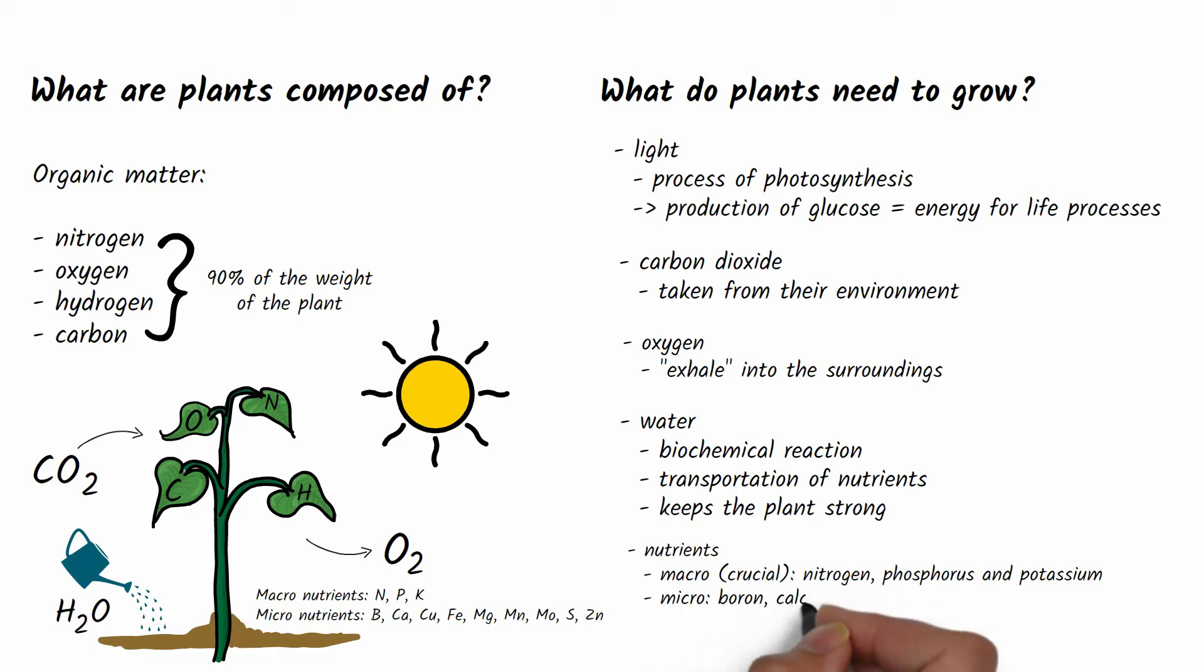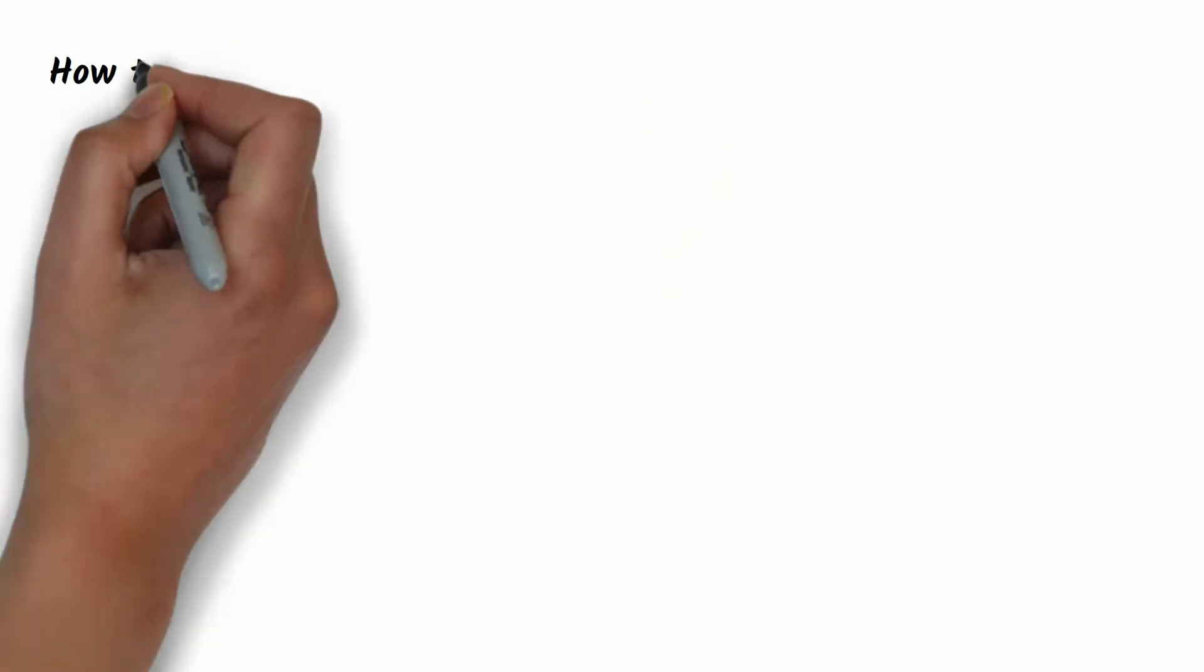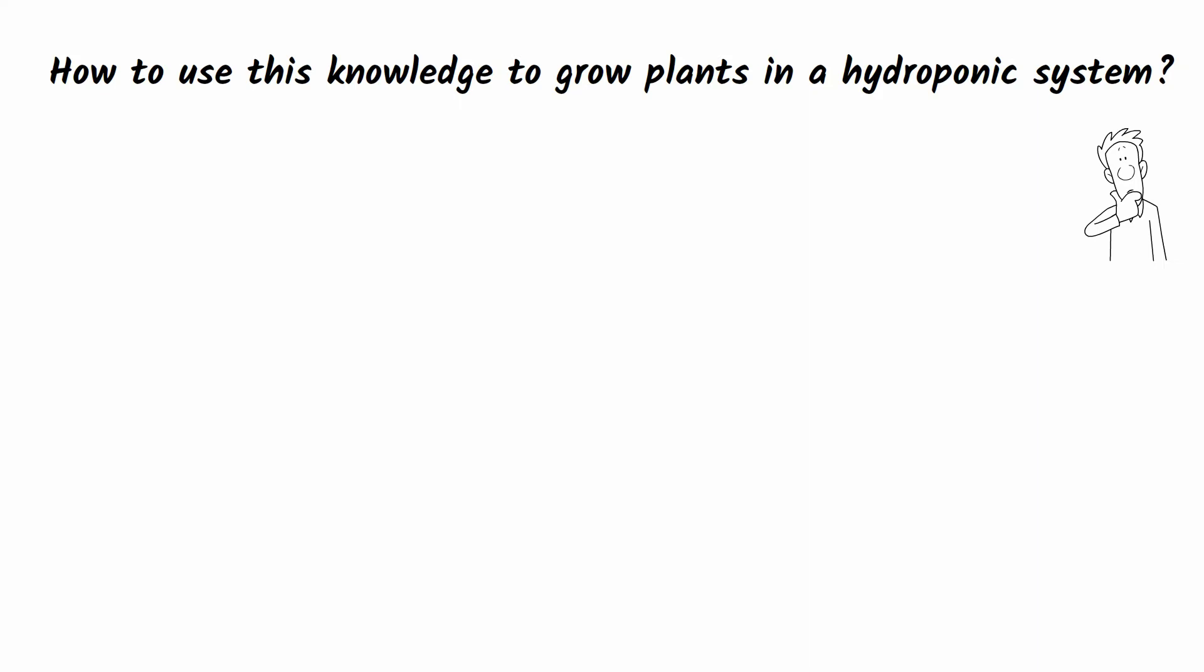These are divided into macro and micronutrients. Macronutrients include nitrogen, phosphorus, and potassium. These are absorbed in the greatest quantities and are crucial for plant survival. Plants also require boron, calcium, copper, iron, magnesium, manganese, molybdenum, sulfur, and zinc.